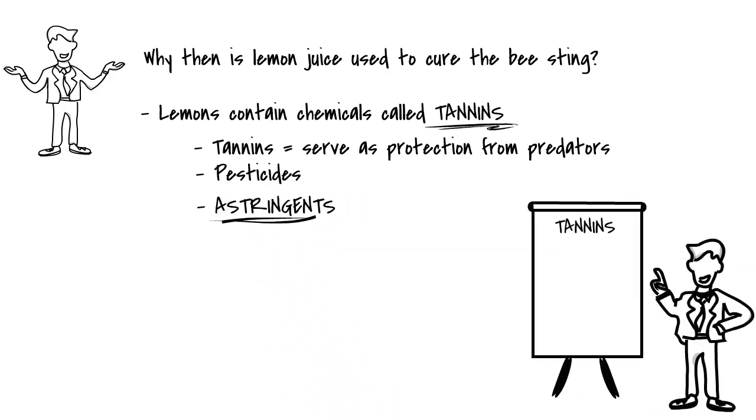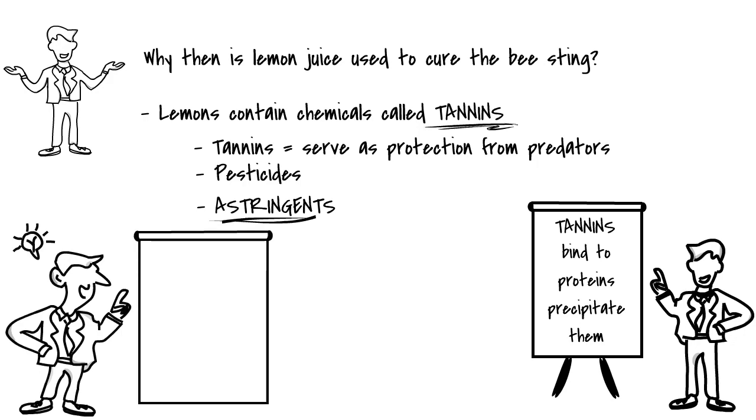As astringents, tannins bind to proteins and precipitate them. It is actually these astringent properties of tannins that cause the dry and puckery feeling in our mouth when we consume unripe lemon.